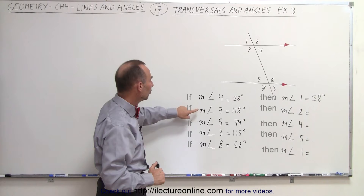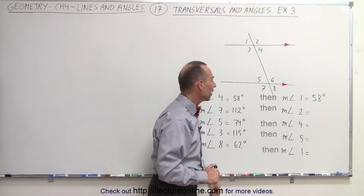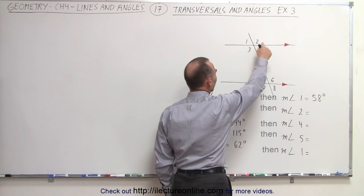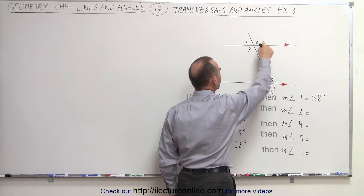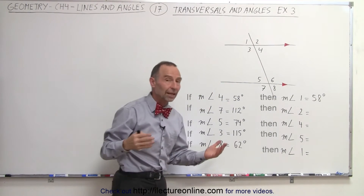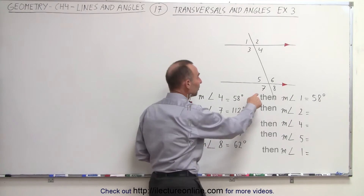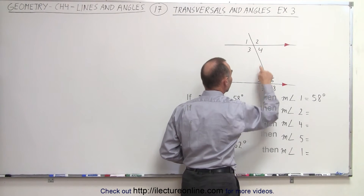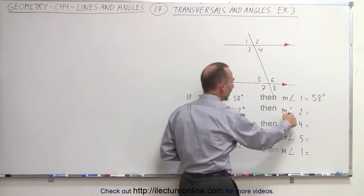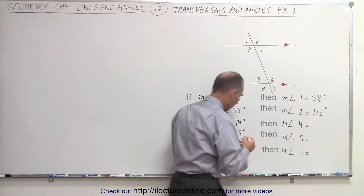The next condition: the measure of angle seven is equal to 112 degrees. What is the measure of angle two? Here's angle seven and here's angle two. These are what we call alternate exterior angles, and we know that they must be equal. Since seven and two are alternate exterior angles, the measure of angle two must also be 112 degrees.